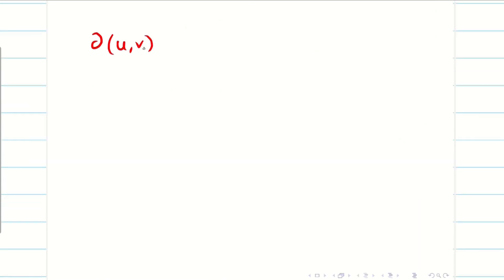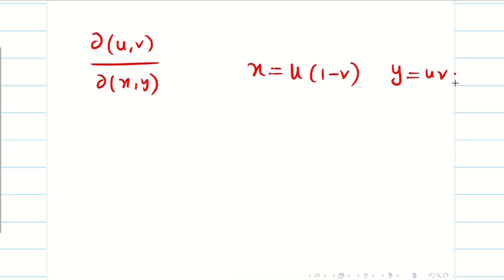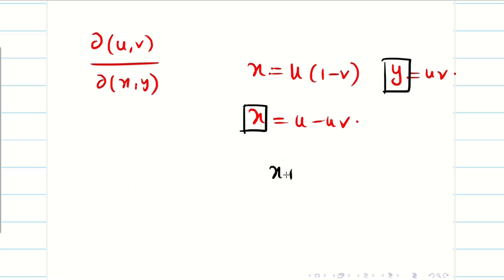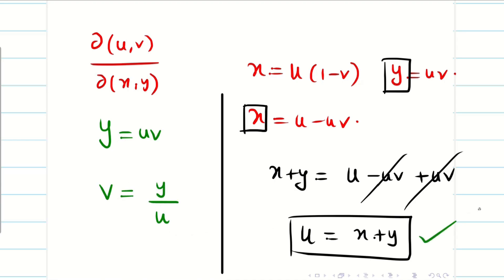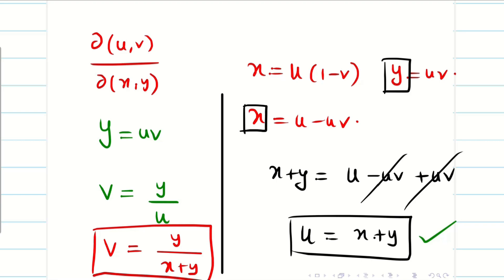Next, we need to find ∂(u,v)/∂(x,y), but the problem is given in terms of u and v. We must convert: x = u - uv and y = uv. If we compute x + y, we get u - uv + uv, so the uv terms cancel and u = x + y. For v, from y = uv we get v = y/u, and substituting u = x + y gives v = y/(x + y).